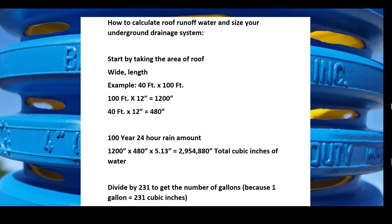Now we're going to put that 100-year rainfall to use. We take 1,200 × 480 × our 100-year 24-hour duration rainfall of 5.13, and that equals 2,954,880 total cubic inches of water.